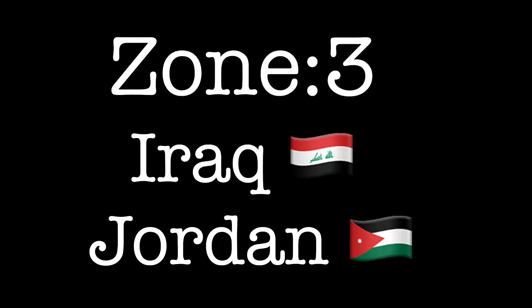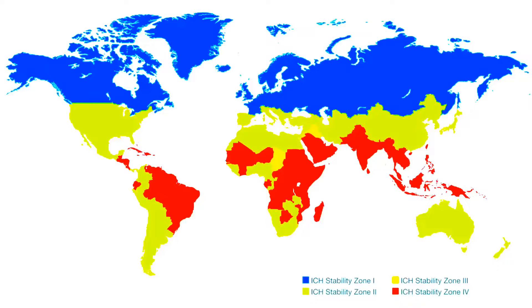For Zone 3, very few countries fall in this zone, so just remember Iraq and Jordan. These tricks will help you recall climatic zones along with the country names whenever needed. With this, I would like to wrap up the video. Thank you.